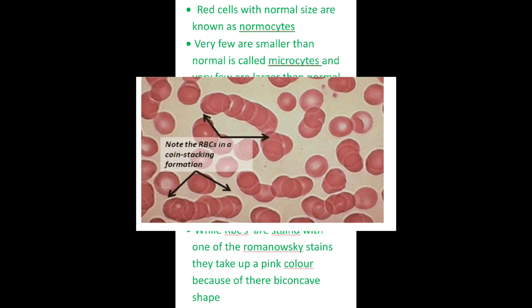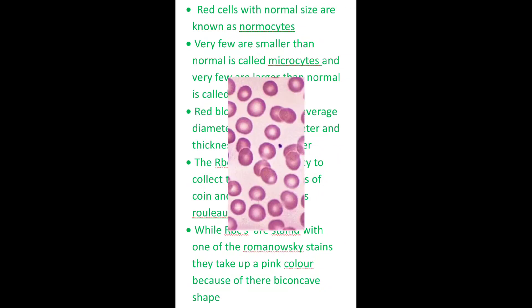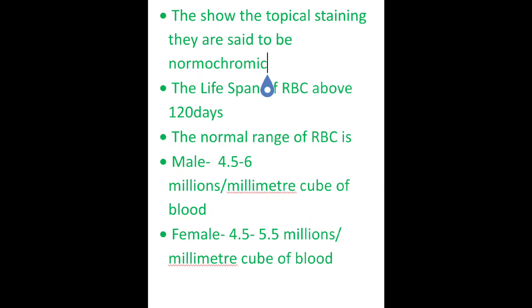RBCs are stained with one of the Romanowski stains. When stained, they take up a pink color because of their biconcave shape. They show typical staining and are said to be normochromic.